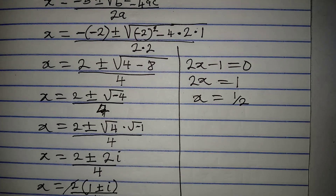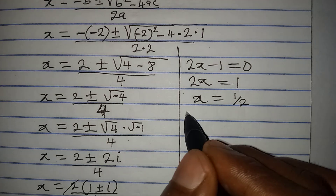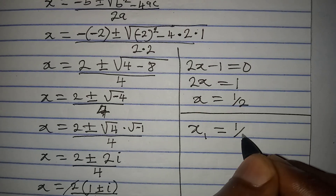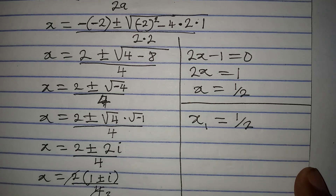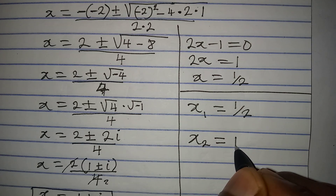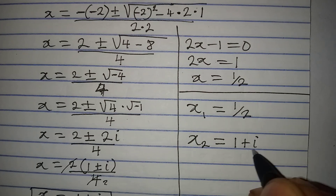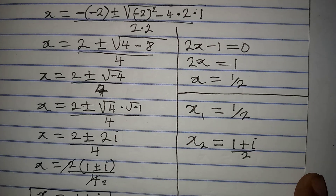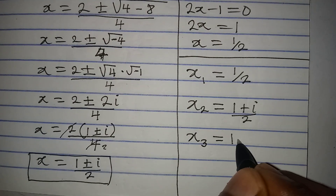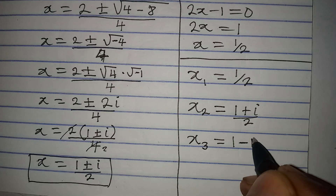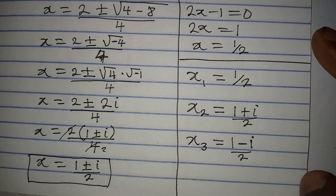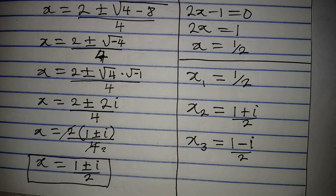Bringing all solutions together: x₁ equals 1 over 2, x₂ equals (1 plus i) over 2, and x₃ equals (1 minus i) over 2. These are the three solutions obtained from the equation. Thank you for watching.